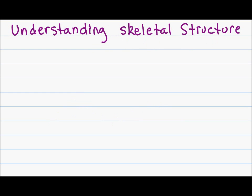Let's try to understand where the skeletal structure comes from. We discussed that a carbon atom with four bonds is sp3 hybridized.